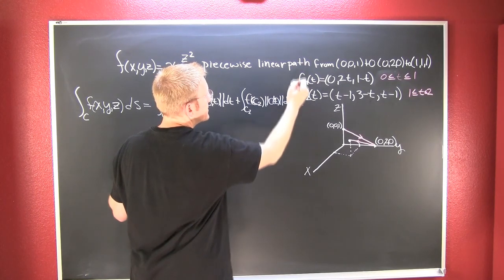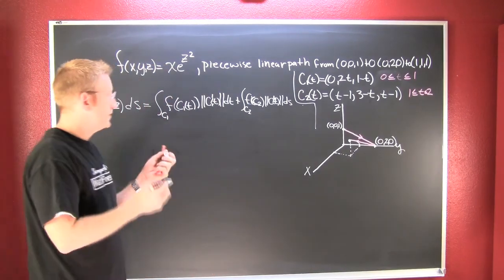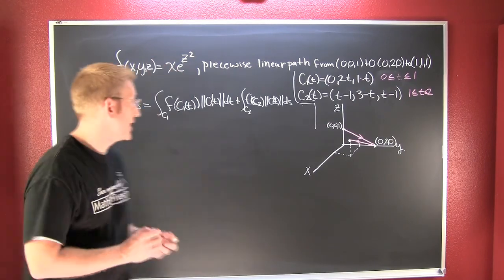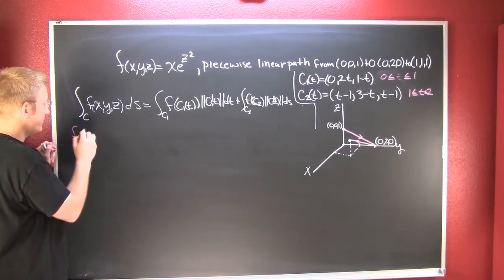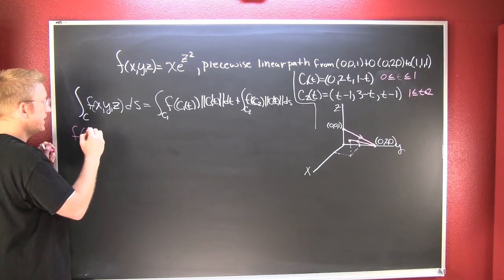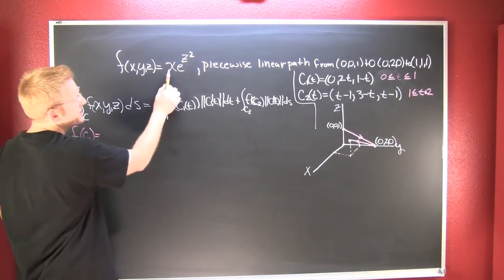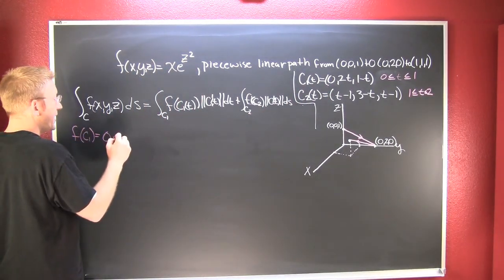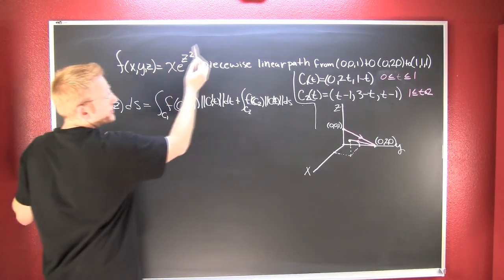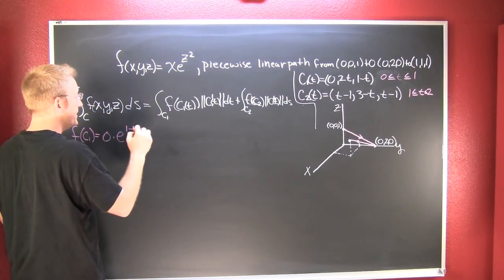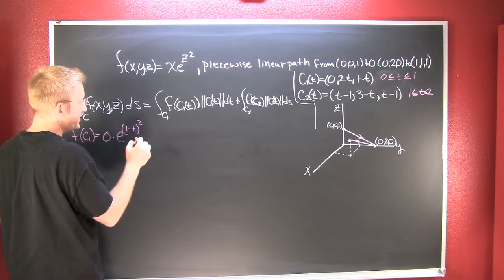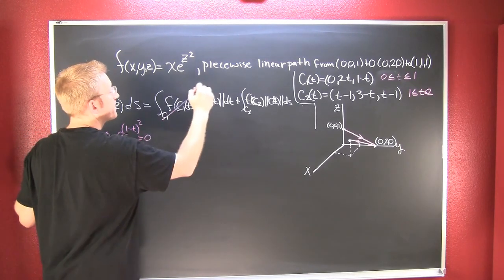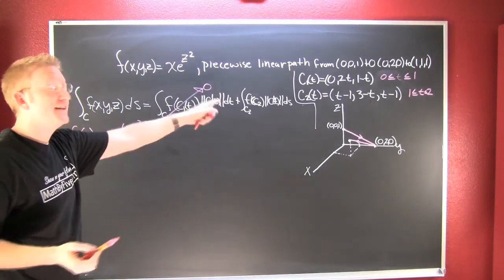Far out. So I need only find those pieces now. I go through and I need to find f(c1). In doing so, everywhere I see an x in c1 I put a 0, 0 times e to the z, and for completeness z is 1-t squared. We see that is going to be equal to 0, so this entire integral is going to go to 0.